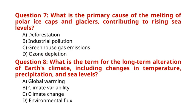Question 7: What is the primary cause of the melting of polar ice caps and glaciers contributing to rising sea levels? The correct answer to Question 7 is option C: Greenhouse gas emissions. Question 8: What is the term for the long-term alteration of Earth's climate, including changes in temperature, precipitation, and sea levels? The correct answer to Question 8 is option C: Climate change.